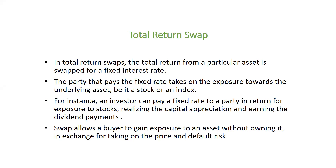The returns from the portfolio include capital appreciation and dividend payments. From Investor A's side, he agrees because he thinks the market will go down in the near future. Both come to an agreement: A gives B his portfolio's capital appreciation and dividends, and B pays A a fixed 12% return.